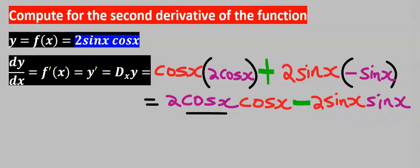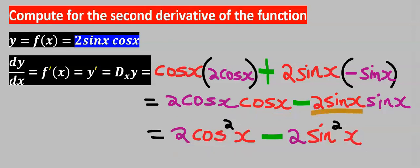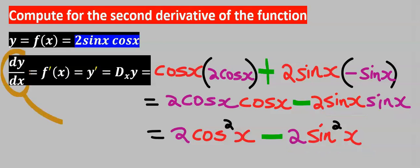Next, when you open up the brackets, cos(x) can multiply cos(x) and sin(x) can multiply sin(x). 2cos(x) multiplied by cos(x) gives 2cos²(x). Likewise, 2sin(x) multiplied by sin(x) gives 2sin²(x). This is the first derivative.